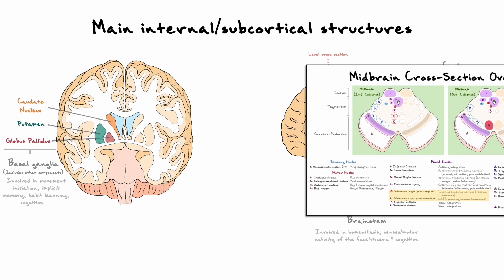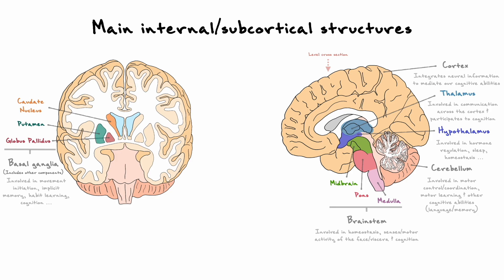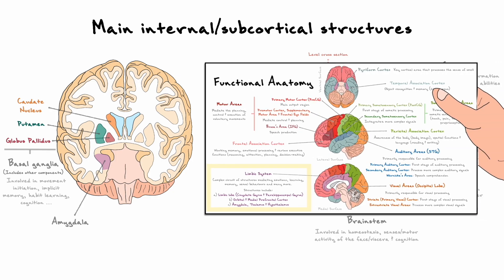In this current cross-section, we can also see another important group of nuclei called the amygdala. The amygdala is a structure we have already encountered when we talked about the functional anatomy of the cortex, and it was an important component of the limbic system. Through various lesion and imaging studies, it was discovered that the amygdala is involved in memory, emotions, fear, anxiety, decision-making, and many more functions of that nature.